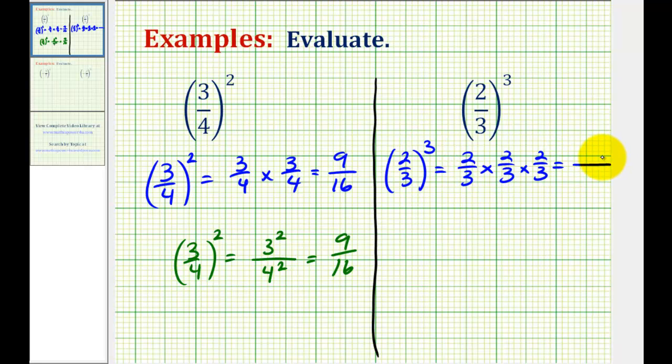So now we can go ahead and multiply. Two times two times two is equal to eight, and three times three times three is equal to twenty-seven.